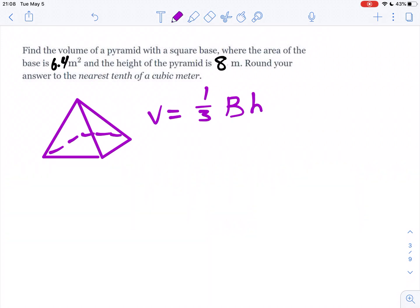Volumes of pyramids. We're going to look at two examples here, starting with given the base area. Find the volume of the pyramid with a square base, where the area of the base is 6.4.